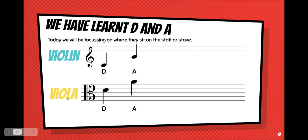If I'm playing viola and my clef is an alto clef, I know that D sits in the third space — one, two, three — it sits in the third space. And if I'm playing A, to read A, it sits in the space above the stave.